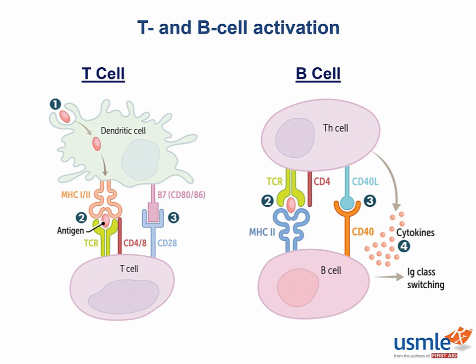B cell class switching also requires two signals. Similar to the T cell, we have an antigen that has already been processed by a T cell, which now presents the antigen to a B cell. This is signal 1.